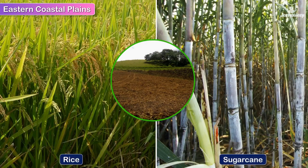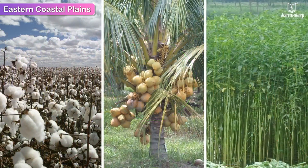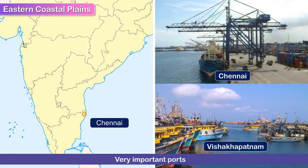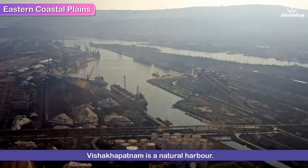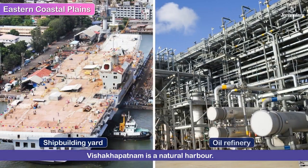Rice and sugarcane are grown in this highly fertile region. Additionally, cotton, coconut and jute are grown in the Eastern Coastal Plains. Chennai and Visakhapatnam are two very important ports. Chennai is one of the largest ports in India. Visakhapatnam is a natural harbour and also has a huge shipbuilding yard and an oil refinery.